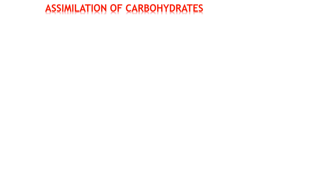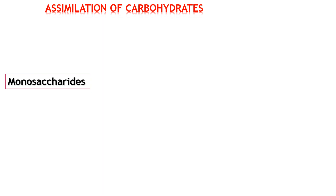Hello learners of biology. Today I want us to look at how carbohydrates are assimilated in the body, because carbohydrates are a class of foods. When we talk about carbohydrates, we know monosaccharides are the building blocks. So when you talk about utilization and assimilation of carbohydrates, you have to think about how monosaccharides are put to use.